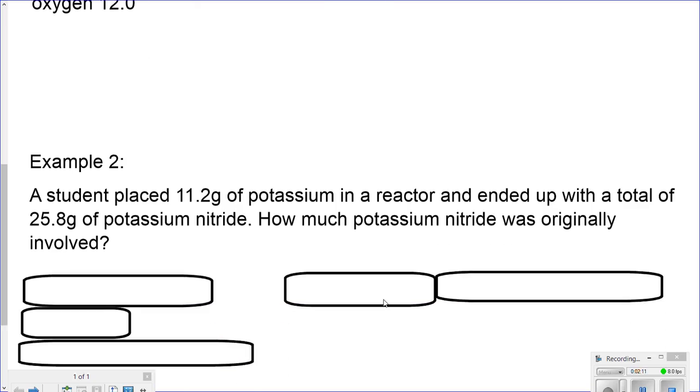Example 2. A student placed 11.2 grams of potassium in a reactor and ended up with a total mass of 25.8 grams of potassium nitride. I ended up with a compound, potassium nitride.